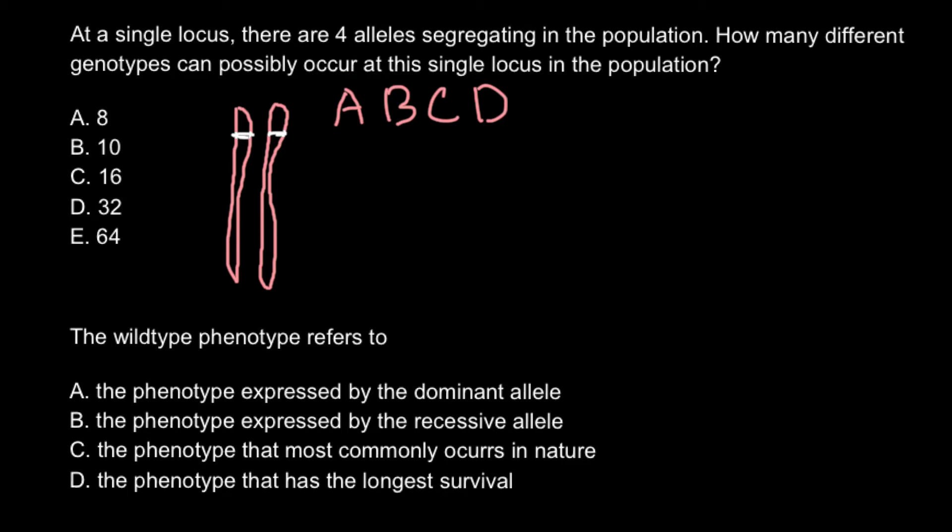So this can be one combination. Another combination can be A allele on both chromosomes. So the question is how many different combinations exist when we have four different alleles. And just want to remind you that allele is just different form of the same gene. So the same gene but just slightly different. It can be a point mutation and we can call such gene a new form or allele.